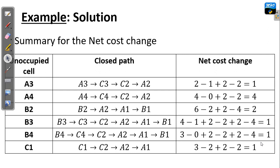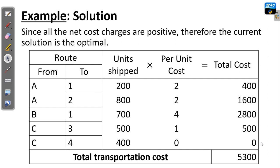We have obtained our optimal solution and can now compute the total transportation costs, which is the minimum. These are the respective transportation schedules: A to dealer 1, A to dealer 2, B to dealer 1, factory C to dealer 3, factory C to dealer 4, along with their associated shipping costs. This is the total minimum cost for transportation. Thank you for watching. Don't forget to subscribe, like, comment, and share, and click the bell to get notifications of new lecture videos once uploaded.